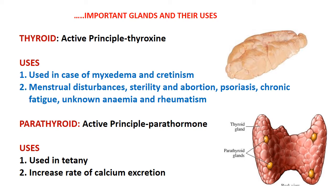Thyroid is a very important gland. Its active principle thyroxine plays a very important role in controlling metabolism and is used in cases of myxedema, cretinism, menstrual disturbances, sterility and abortion, psoriasis, chronic fatigue, unknown anemia, and rheumatism. Parathyroid remains as small bits over the thyroid gland — four small bits. Its active principle parathormone has an important role in mineral metabolism especially calcium balance, used in tetany and to increase the rate of calcium excretion.